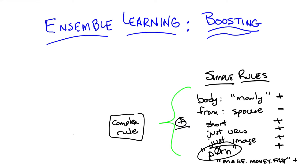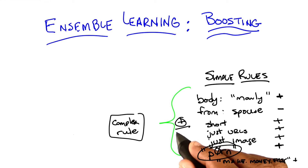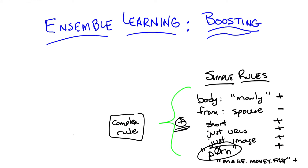The characteristic of ensemble learning is that you take a bunch of simple rules, all of which kind of make sense. You can see them as sort of helpful, but on their own individually they do not give you a good answer. And then you magically combine them in some way to create a more complex rule that in fact works really well.